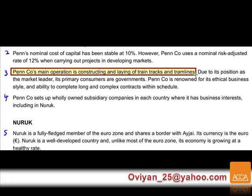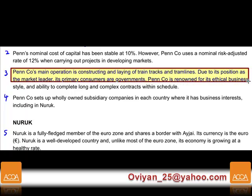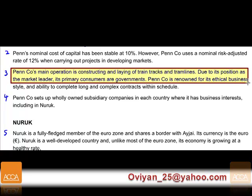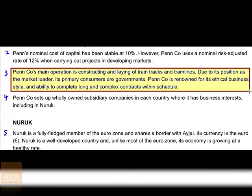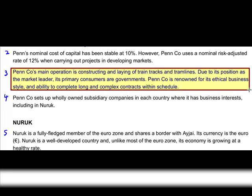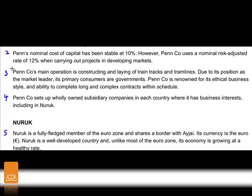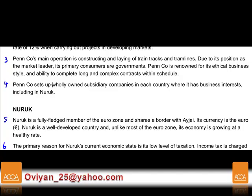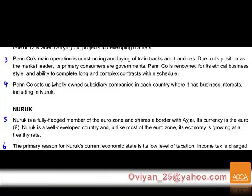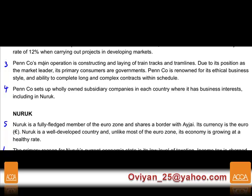Penn company's main operation is construction and laying of train tracks and tram lines. Due to its position as a market leader, its primary consumers are governments. Penn is renowned for its ethical business style and ability to complete long and complex contracts on time. There is no link between the September and October articles — same company name, but separate cases.